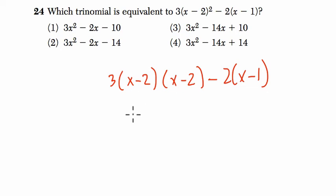But I'm going to multiply x minus 2 first by itself. So we get x squared minus 4x plus 4. And then here we distribute negative 2, so negative 2 times x is negative 2x. Negative 2 times negative 1 is plus 2. And here we're going to multiply 3 by all the terms inside the parentheses.